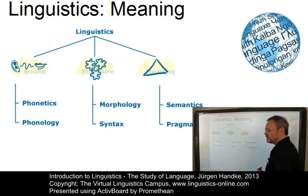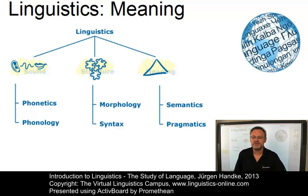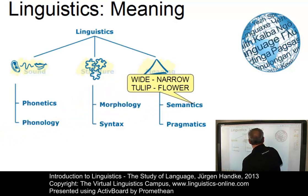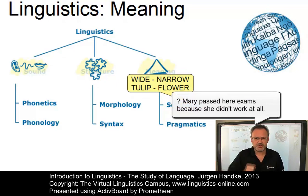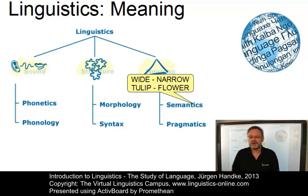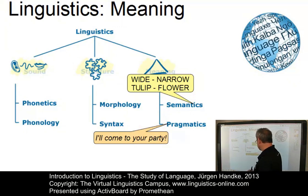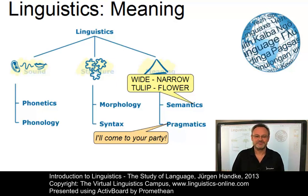Then we have the branch dealing with meaning — the study of meaning of words, sentences, and even larger elements. In word semantics, an interesting question is: what are the relationships between items such as 'wide' and 'narrow,' or between 'tulip' and 'flower'? Sentence semantics addresses what is logically strange about a sentence like 'Mary passed her exam because she didn't work at all.' Pragmatics is the branch that studies the use of language and its effects — meanings that sentences have in particular contexts. For instance, is 'I'll come to your party' a promise or a warning?